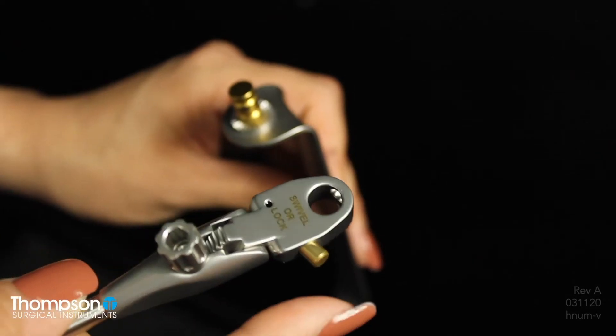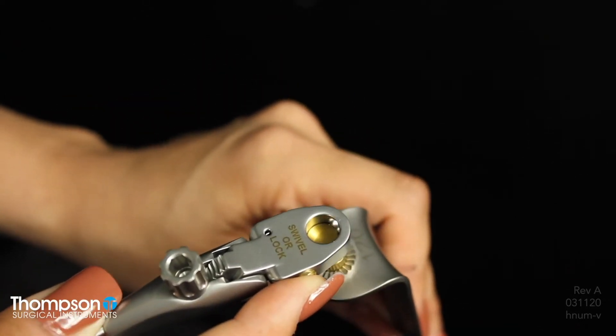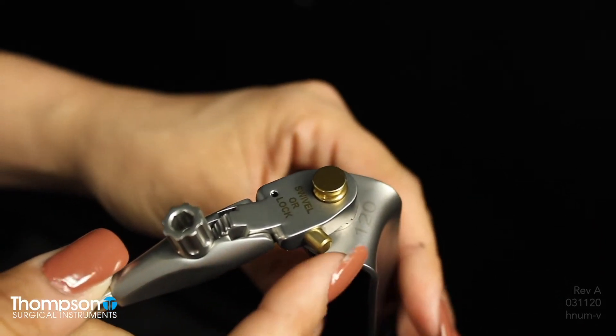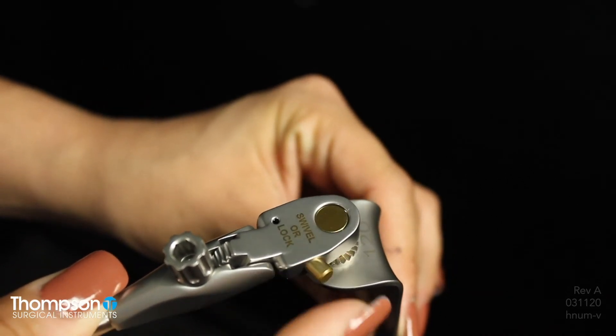Thompson's retractor handles achieve precise, consistent retraction in a variety of different ways. Using our patented S-lock handles and blades, you can switch between swivel and locked positions by pressing the plunger and adjusting the position of the blade nipple up or down.